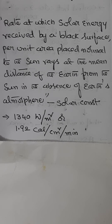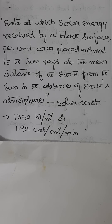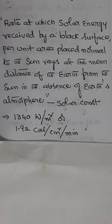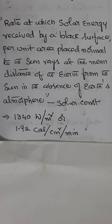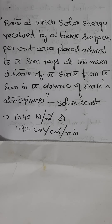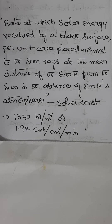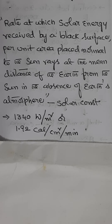Therefore we need a more constant quantity. The solar constant is defined as the rate at which solar energy is received by a black surface per unit area placed normal to the sun's rays at the mean distance of the earth from the sun, in the absence of Earth's atmosphere. Its value is found to be 1300 W/m², equivalent to 1.92 calories per centimeter per minute.